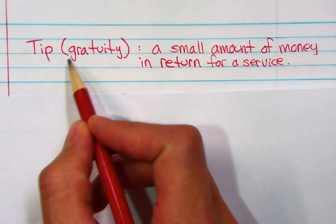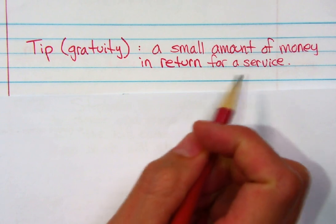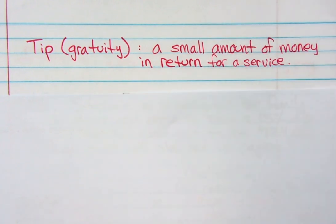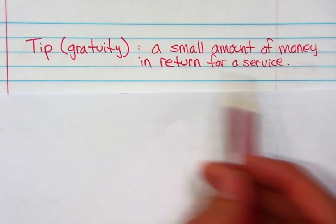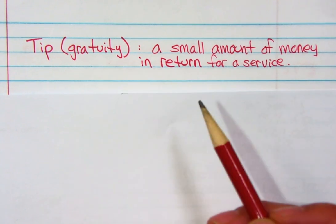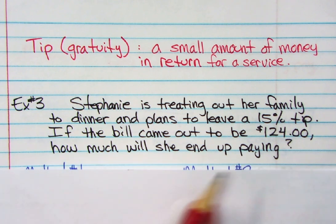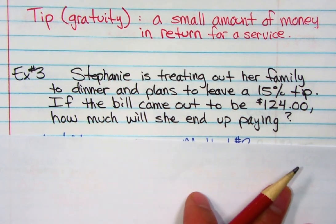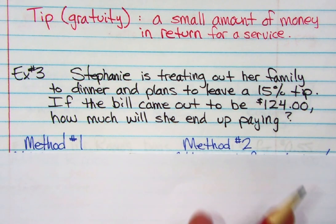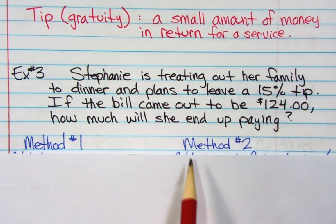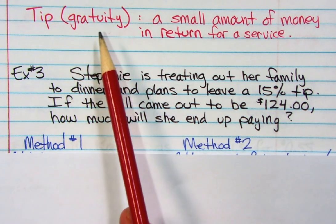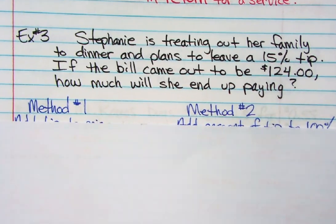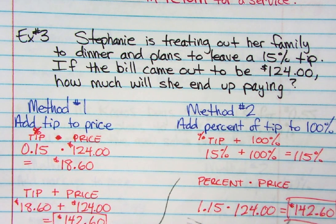That brings us to gratuity, or tip. A tip is an amount of money given in return for a service. Gratuity comes from the word gratitude — you're thankful for the person bringing you drinks and food, so you give them a little extra money for the service they provided. Here's an example: Stephanie is treating her family out to dinner and plans to leave a 15% tip. If the bill comes out to $124, how much will she end up paying? Tip works the same way as sales tax, except the extra money goes to the worker rather than the government.